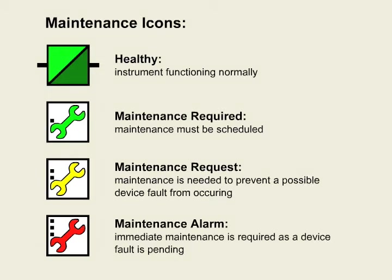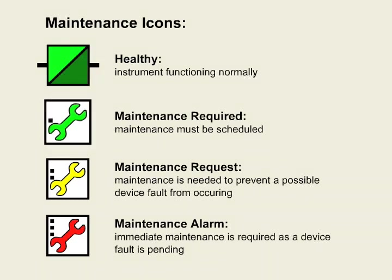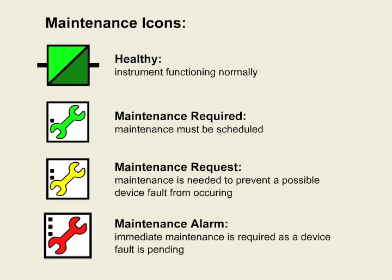If the instrument is healthy and working fine, it uses this icon. If the instrument notices a problem developing, it can alert the maintenance staff with the following icon and also indicates when maintenance would be required. If the problem gets worse and the instrument is about to fail, it can use this icon to call for immediate maintenance. If the maintenance call goes unanswered and the device fails, then the following icon would be displayed. With all these maintenance tools available with PROFIBUS, your maintenance staff can quickly move from reactive maintenance to predictive maintenance. This new paradigm greatly reduces the total cost of ownership of your instruments.